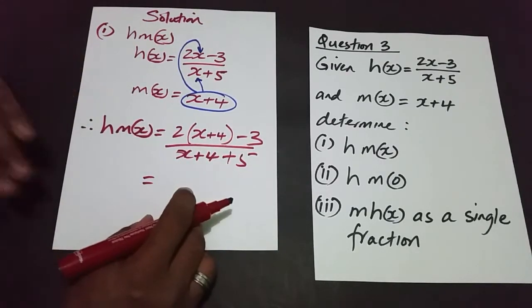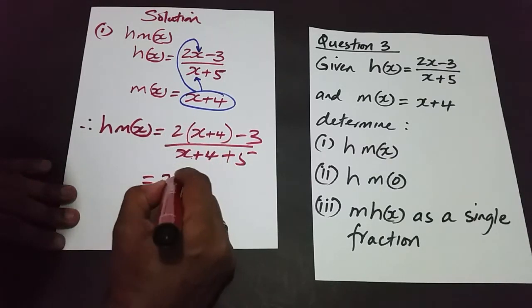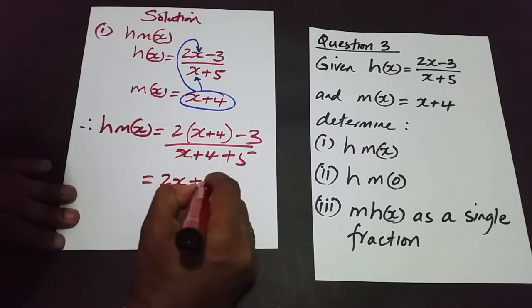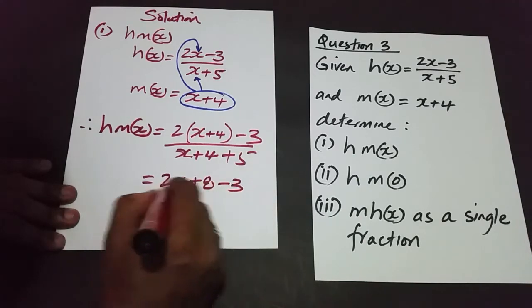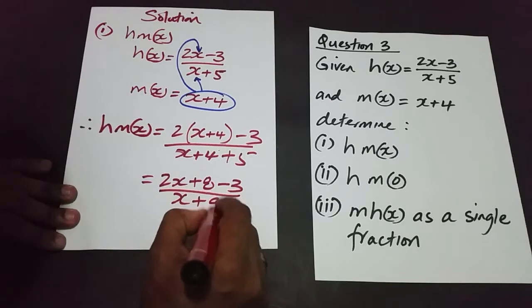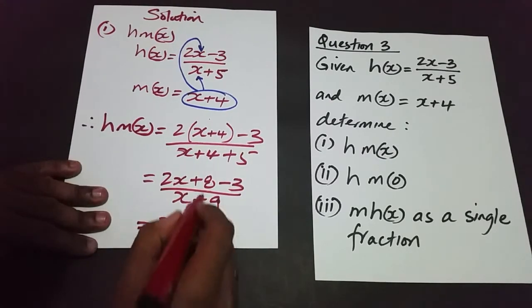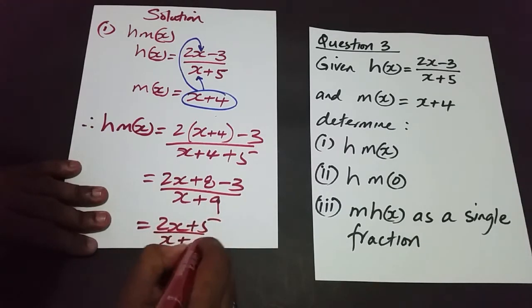So this is going to be equal to, we can expand here, so it's 2x plus 8 minus 3 all over x plus 9, to give us a final answer of 2x plus 5 over x plus 9.